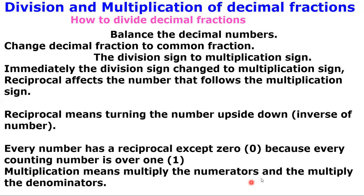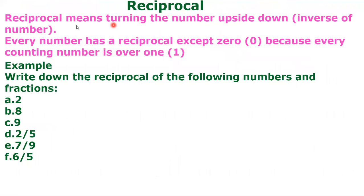Multiplication means you multiply the numerators and then you multiply the denominators. So when you turn the numbers upside down, you multiply the numerators and then multiply the denominators, and later you turn your answer into decimal fraction and then you are done. Reciprocal means turning the number upside down — that means the inverse of a certain number.